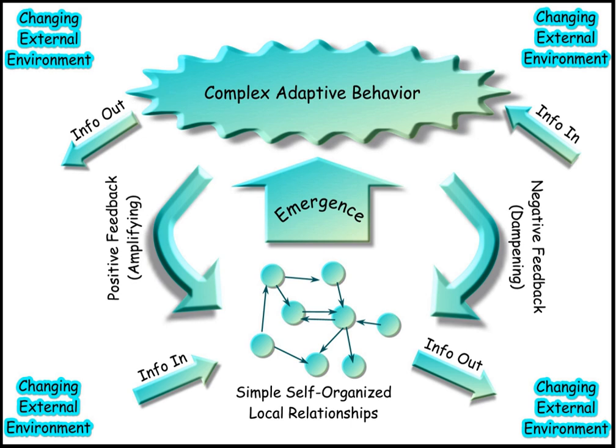Systems science is an interdisciplinary field that studies the nature of systems—from simple to complex—in nature, society, cognition, engineering, technology and science itself. To systems scientists, the world can be understood as a system of systems.